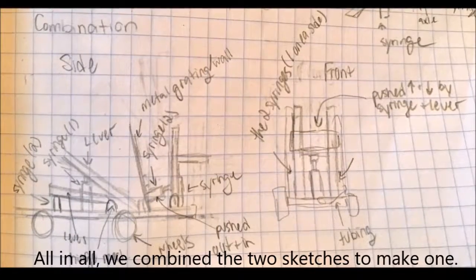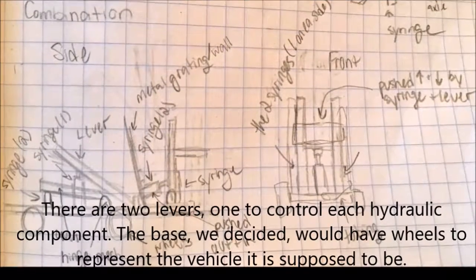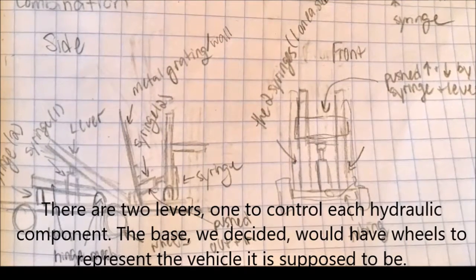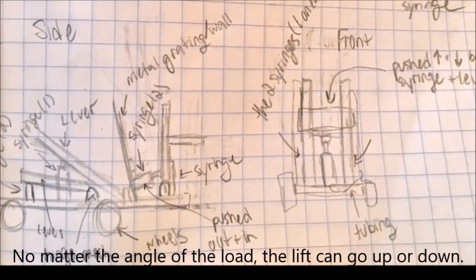All in all, we combined the two sketches to make one. There are two levers, one to control each hydraulic component. The base, we decided, would have wheels to represent the vehicle it is supposed to be. No matter the angle of the load, the lift can go up or down.